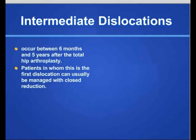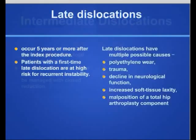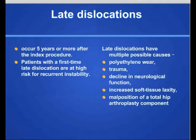In late dislocation, defined as after 5 years or more, these patients are at high risk of recurrent instability. Usually there are multiple possible causes such as polyethylene wear, trauma, declining neurological function, increased soft tissue laxity, and possibly malposition of the component.